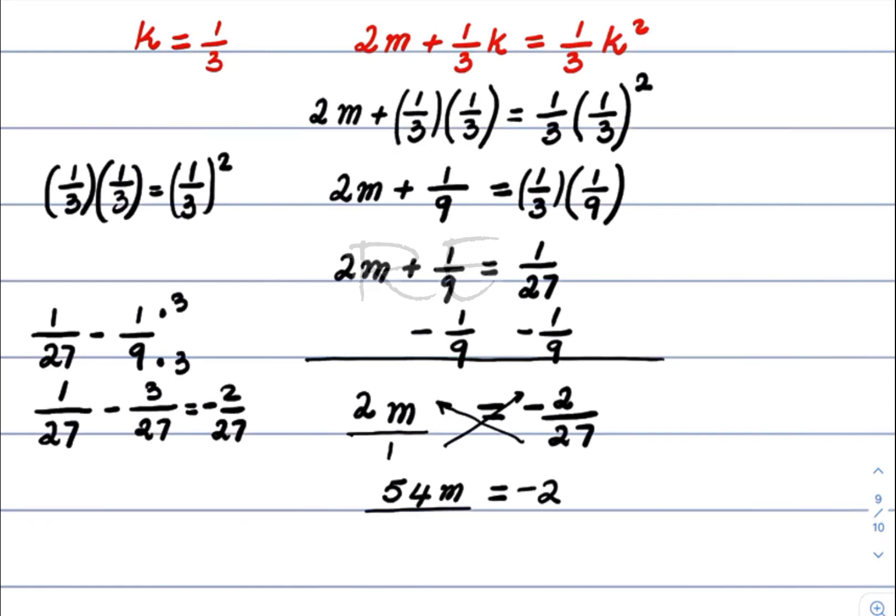To isolate m, we divide by 54. We obtain m equals negative two over 54. Both numerator and denominator are even, so they're divisible by two. We reduce the fraction, and our final answer is negative one over twenty-seven.